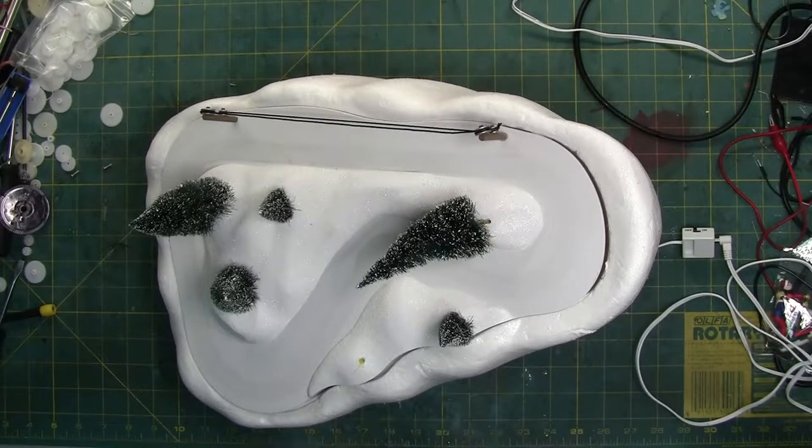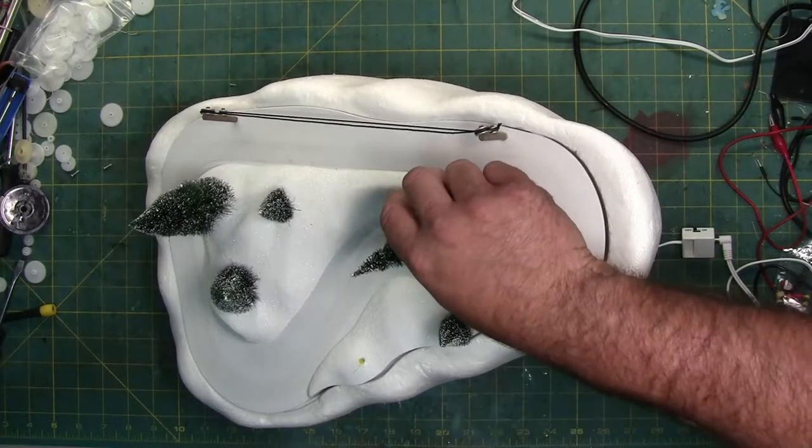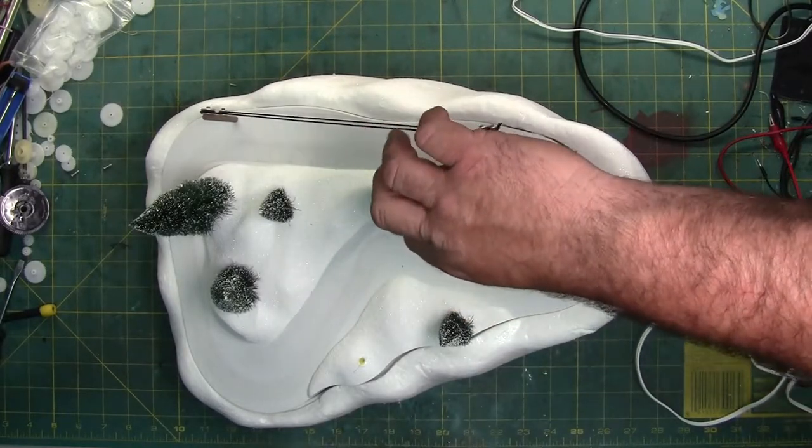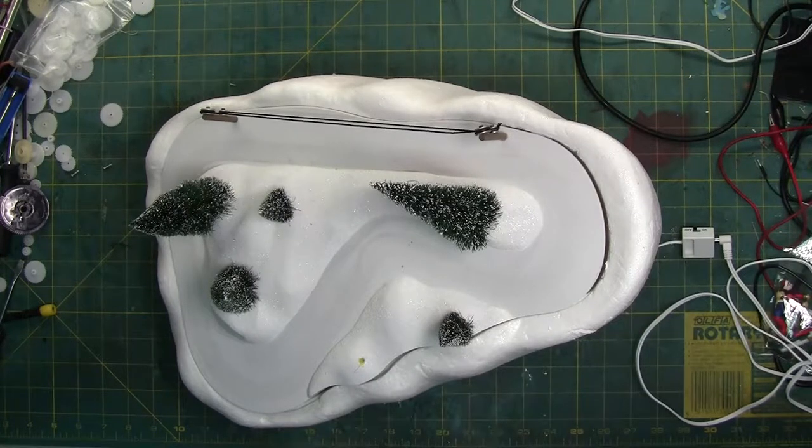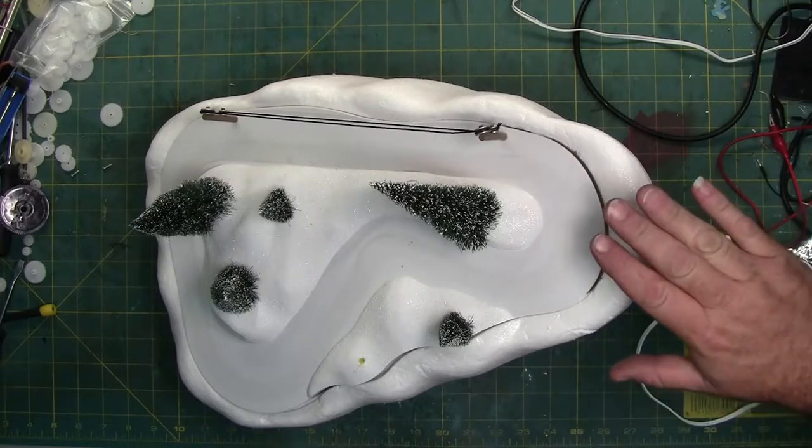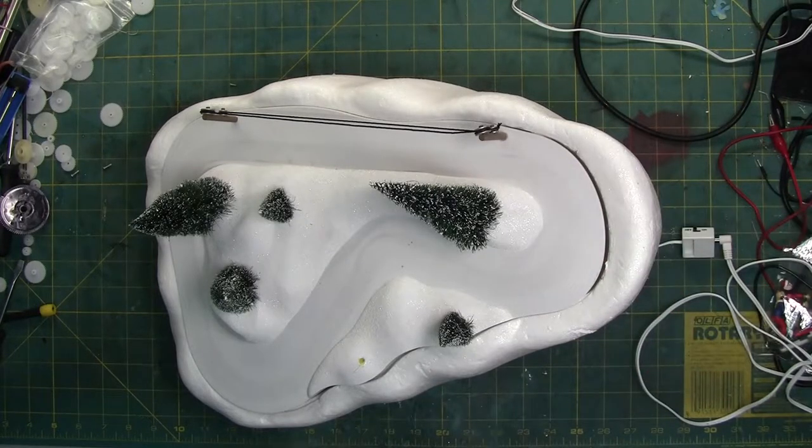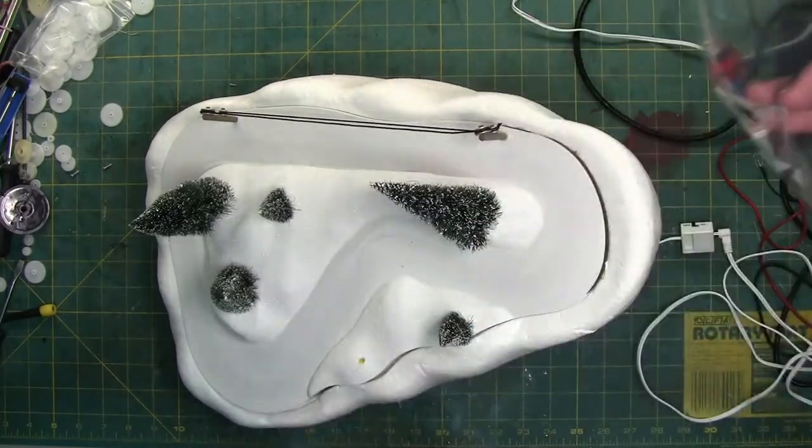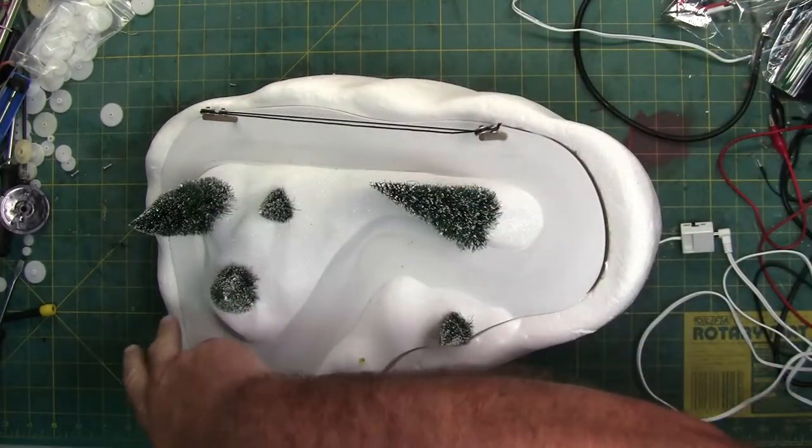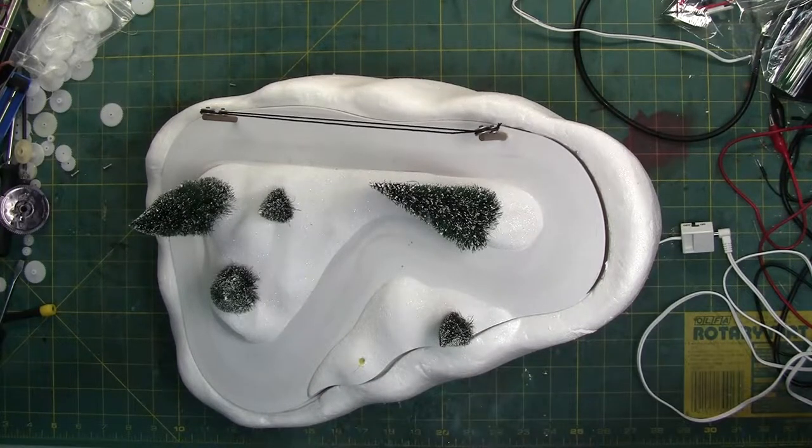All right, today in the laboratory we are working on the Department 56 animated ski slope, or the name on the box is Village Animated Ski Slope. I was told from the owner that the skiers, which are right here in the baggie, go around and they would stop right in here and then she would smell a burning smell.